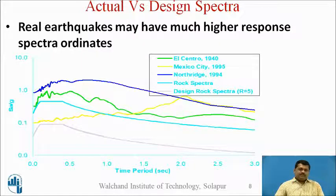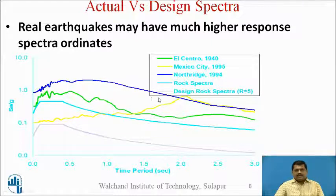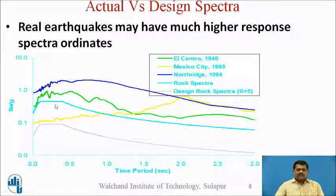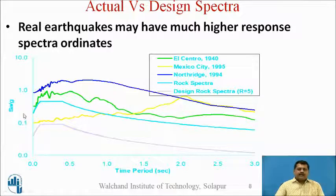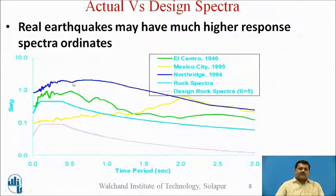Now let us see the actual theme in this design spectra and why this discussion is important. There are three actual earthquake records shown. The blue line is the Northridge earthquake of 1994. The green line is the El Centro earthquake record — you can see how much randomness is there. The light blue line is the rock spectra. The design rock spectra, with R equal to 5, is also shown here. If you observe, the design spectra is much lower than the actual spectra of the recorded earthquakes.